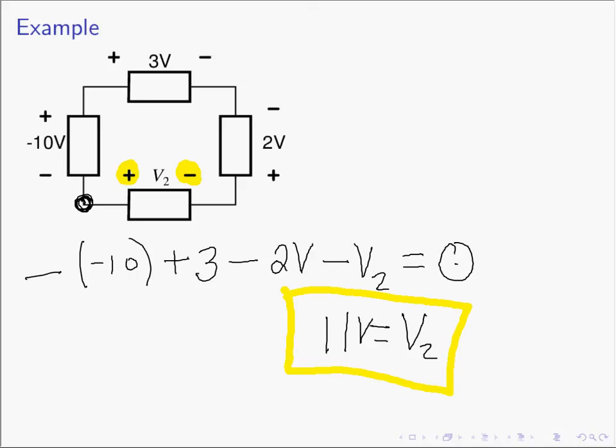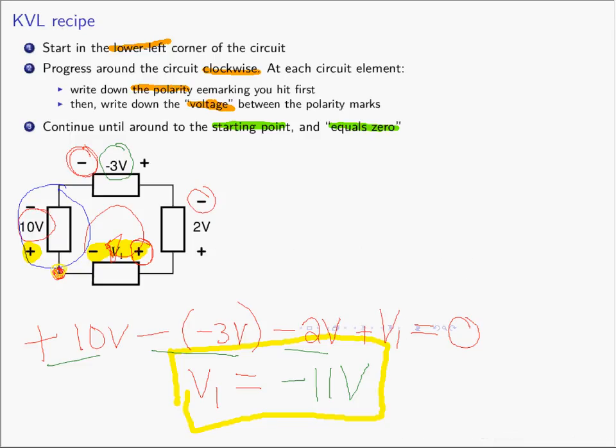That's the same voltage. The difference between V1 and V2 is simply the polarity markings, and the number is exactly the same — the only difference being the sign of the voltage. Same voltage: V2 and V1 really are the same answer; it's just two different names for the same voltage. So here's the recipe for computing KVL. Do it the same way every time so that you're not questioning how to write the KVL equations, because as we go forward, you'll see that these terms are going to get much, much more complicated.